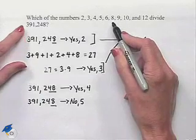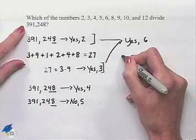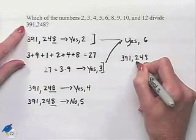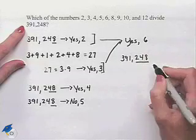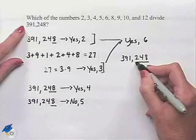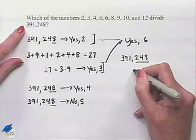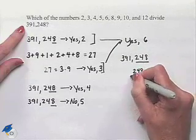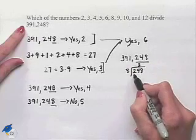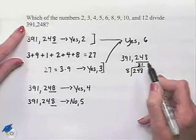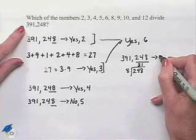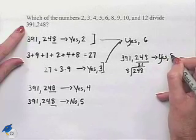To determine whether or not it's divisible by 8, we're going to take our number, 391,248, and look at the last three digits. If 8 divides the last three digits evenly, then the entire number will be divisible by 8. Well, let's look at 248. If we divide that by 8, 8 divides 24 three times, 8 divides 8 one time, and that is divisible by 8. So we'll say yes for 8.